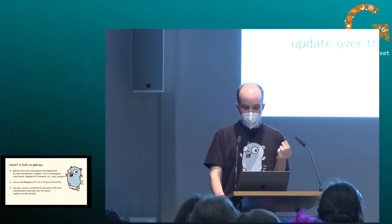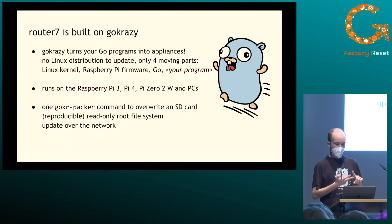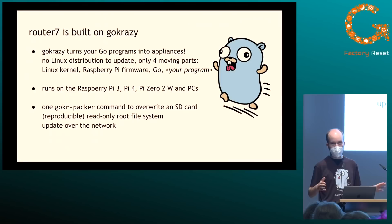I was stuck between a rock and a hard place. I could pin that release and stop auto-updates, but that was not the point of the device — I really wanted the auto-updates. So I decided it would be fun and more reliable to build my own stuff. And when I say build my own, I don't mean just installing standard network software on Debian or OpenBSD — I mean I'm going to rewrite the whole thing in Go. So that's what I did. Router7 is a home router built on go-crazy. go-crazy turns your Go programs into appliances.